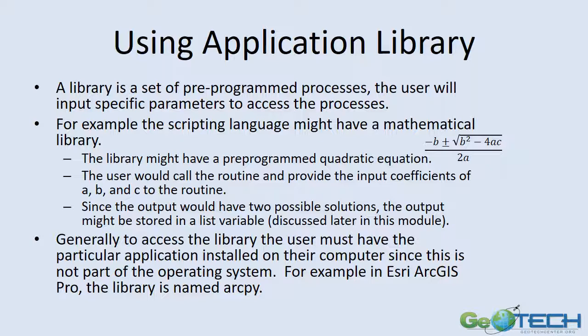Application libraries are extremely important, especially in Python and other scripting languages. If you need a command, somebody else has probably already written it, and you don't need to write it from scratch. For example, if you need a clipping command, someone has already written this in a geospatial library, and you can just pull that command, put the right terms in, and use it. There are also mathematical libraries — for example, the quadratic equation where you just input coefficients a, b, and c, and the actual code behind it has already been written by somebody else.